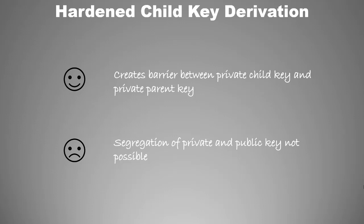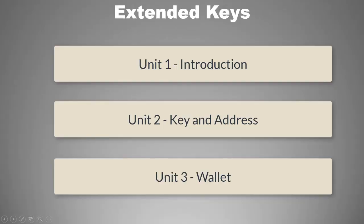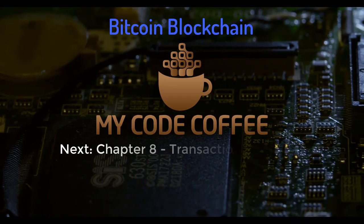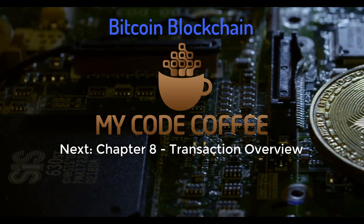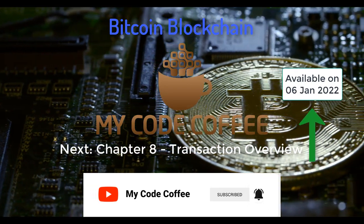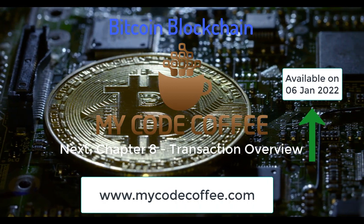In this chapter, we learned what an extended key is, what we mean by the tree-like key structure of HD wallets, the different types of child key derivations, and what a hardened key is and how it differs from a normal key. If you have watched all the previous chapters, congratulations — you are now ready to understand the most important concept of blockchain technology, which is transactions. See you in the next video with MyCodeCoffee. Don't forget to subscribe and hit the bell icon, and visit MyCodeCoffee.com for easy navigation to all chapters.